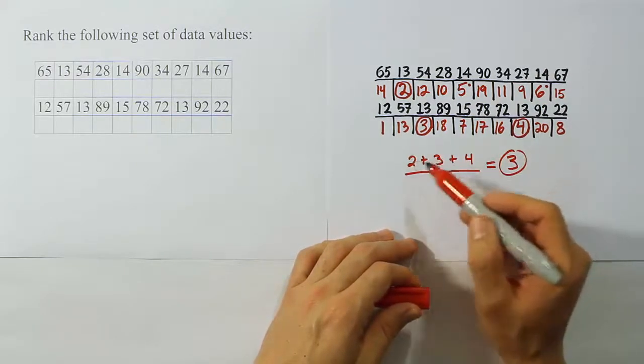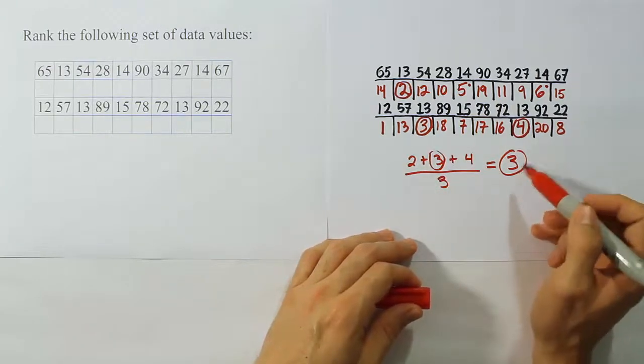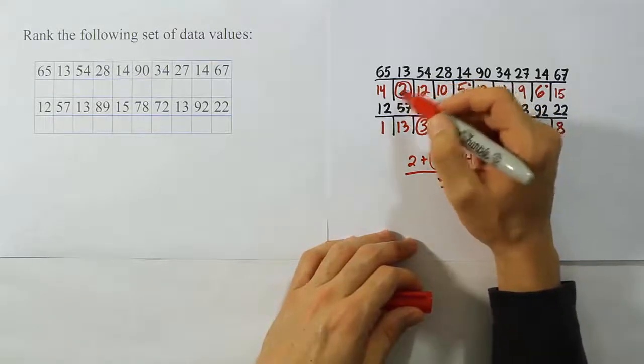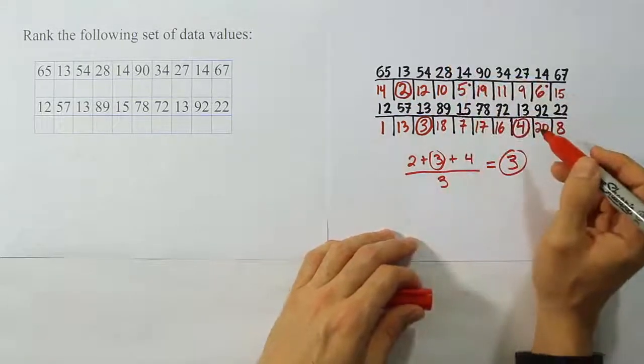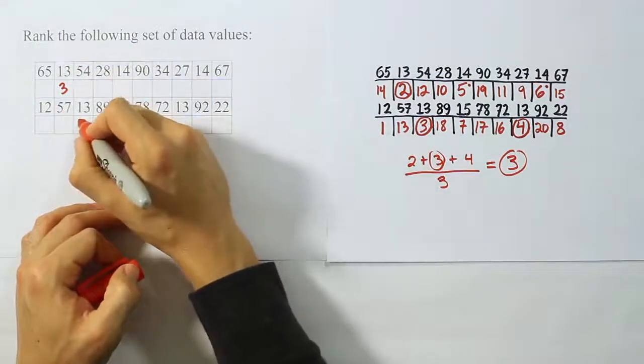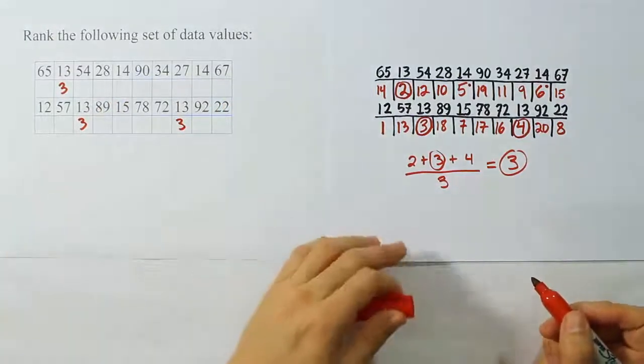Whenever there's three things tied, it's always the middle number that's your answer for this, okay? So that means everybody's going to get a 3 here, no longer the 2. So don't give it 2, give them 3. So I'm going to give all the 13s the rank 3. So all the 13s will get 3. Okay, so that's how I handle the tie in that situation.